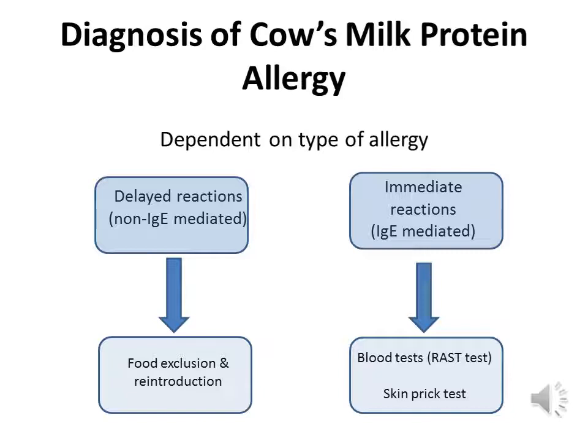Unfortunately there isn't any particularly reliable test for cow's milk protein allergy. If your child has delayed symptoms, the main way to find out is by avoiding cow's milk protein for a period of time — usually around four weeks. We then look to reintroduce it: if symptoms improved on removal and returned on reintroduction, that confirms the diagnosis. For immediate reactions, some tests may be used, but we primarily look at whether symptoms improve when the food is removed.